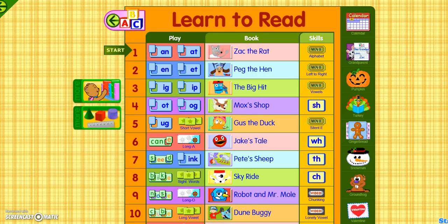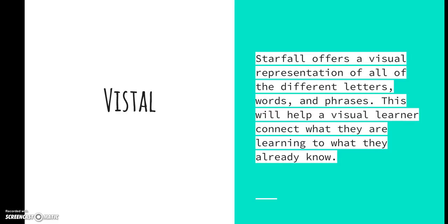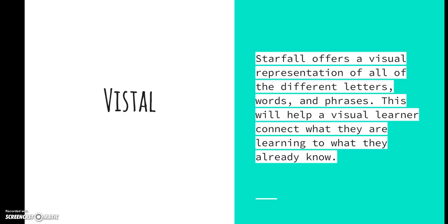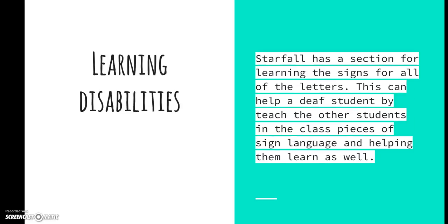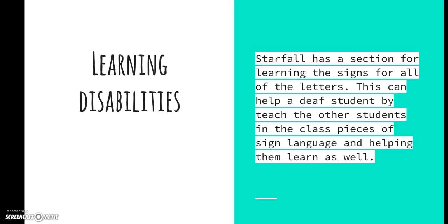Now we're going to take a look at why this site is really good for differentiated learners. Starfall supports different learners in many different ways. Visual learners are really helped because the representation of letters is brought through by pictures, words, and phrases, and they're able to draw a connection between A being an ant and an apple, linking new knowledge to what they already know. Audio learners can really excel here because they have the ability to listen to anything on the site, whether it be the text or the reading. Students with learning disabilities are also helped because they can learn signs for different letters, and their classmates can learn them as well. People with different learning paces are also greatly aided here because Starfall allows people to be working on their alphabet while others are working all the way up to level four, so all the kids are constantly challenged.